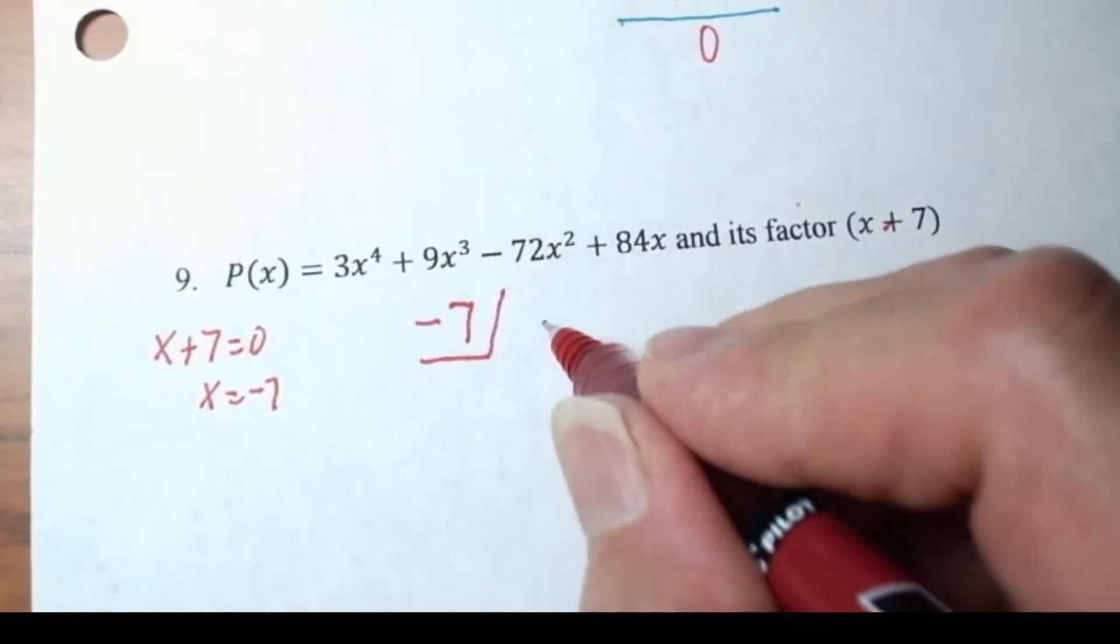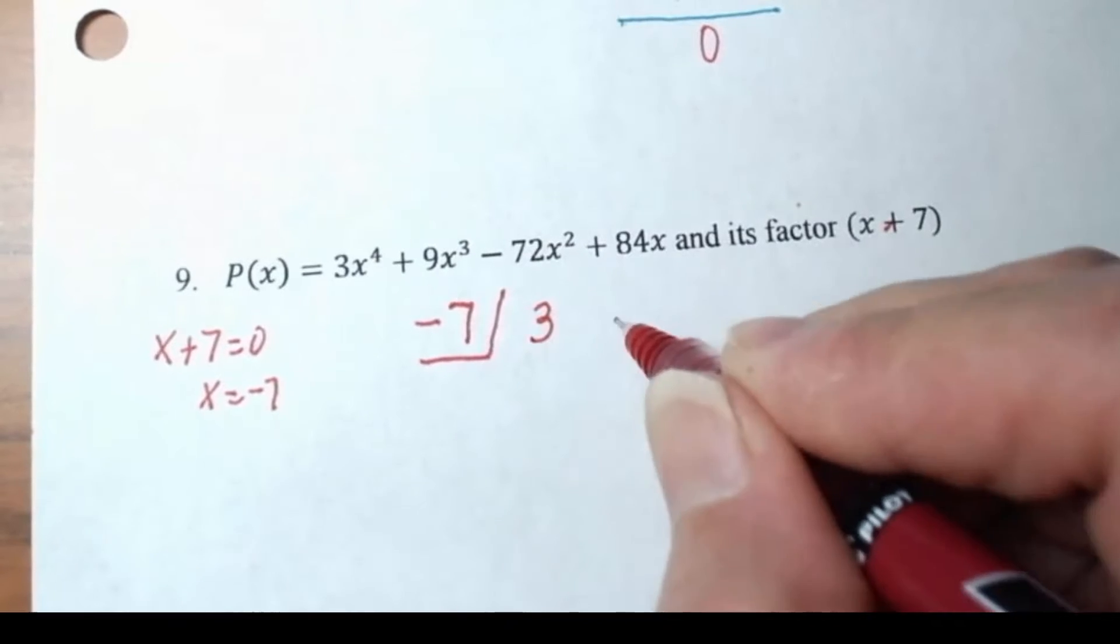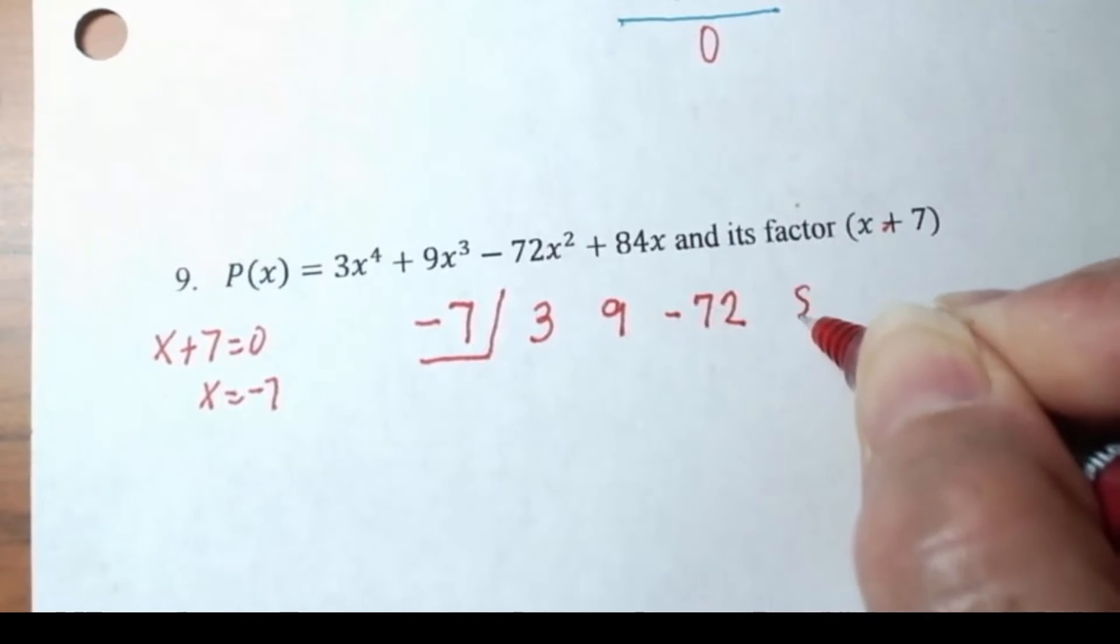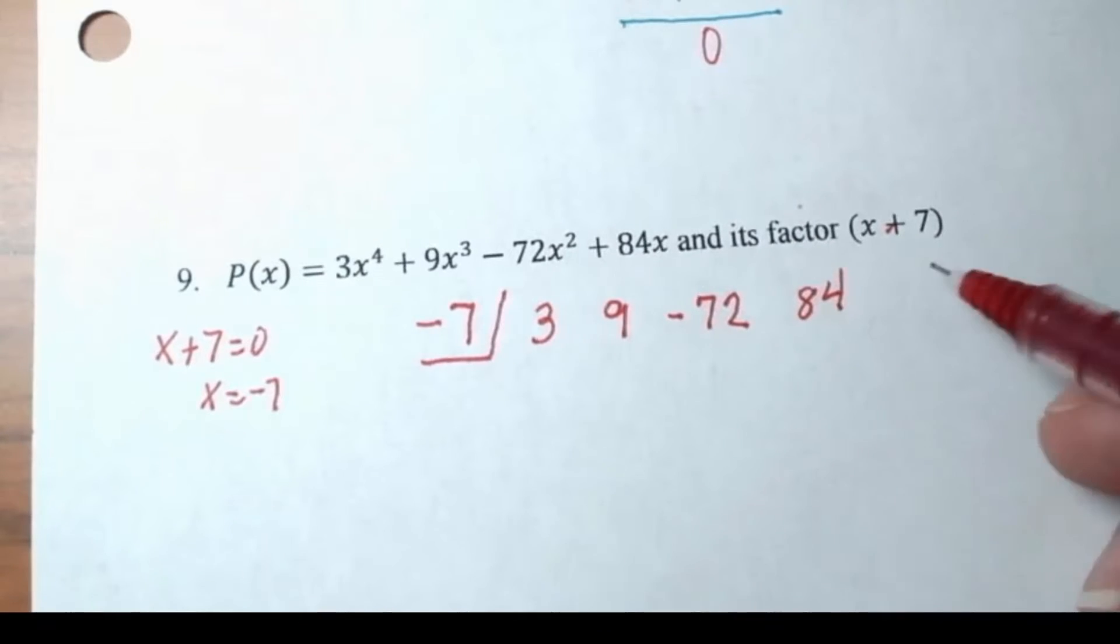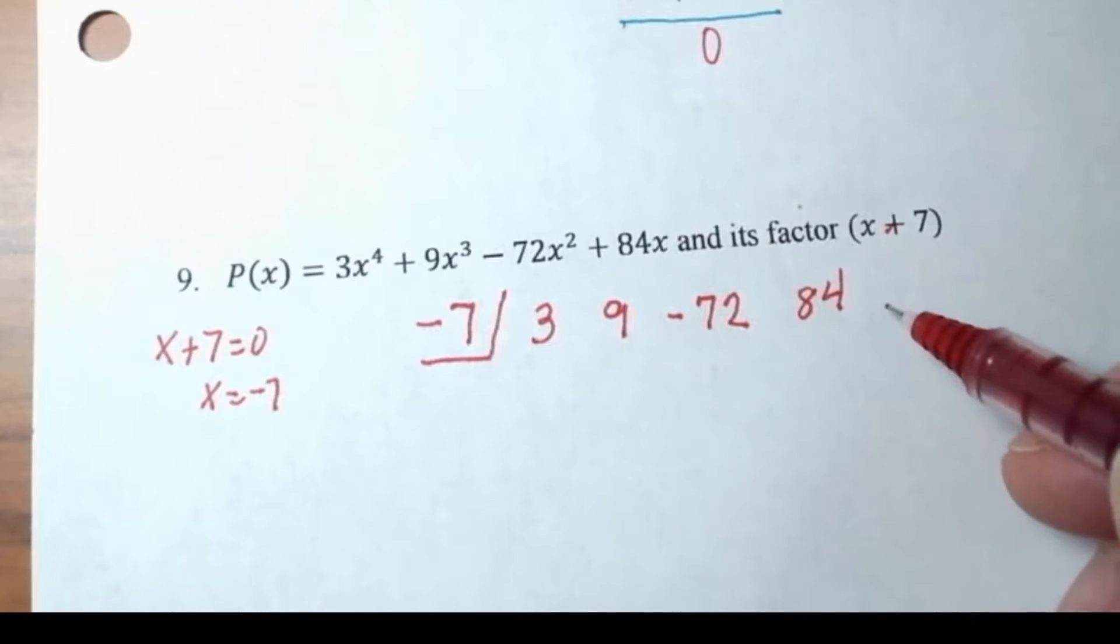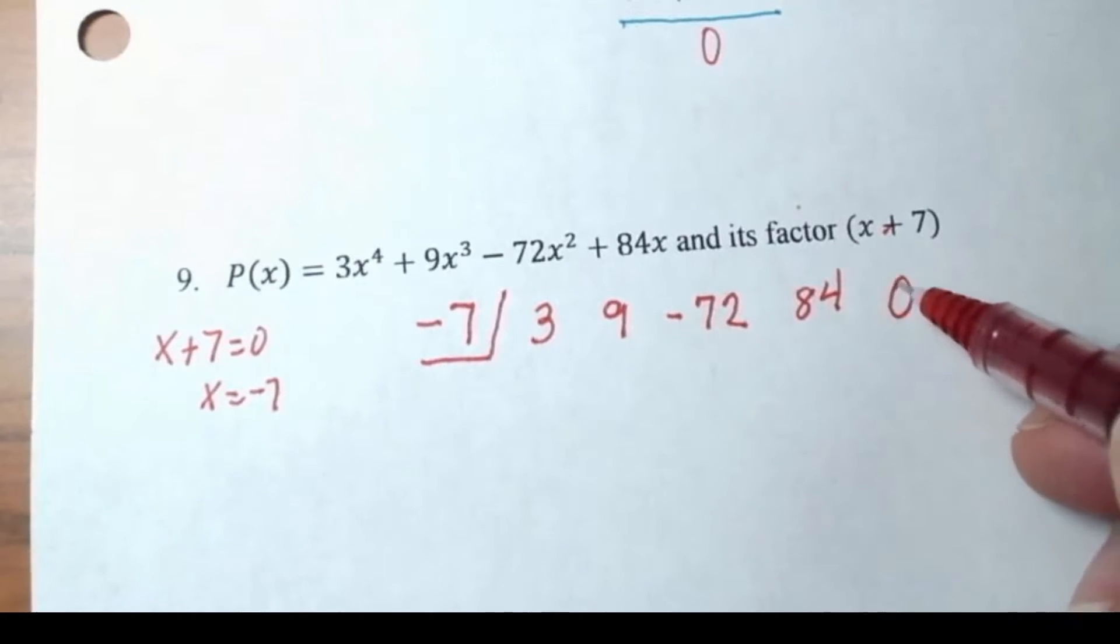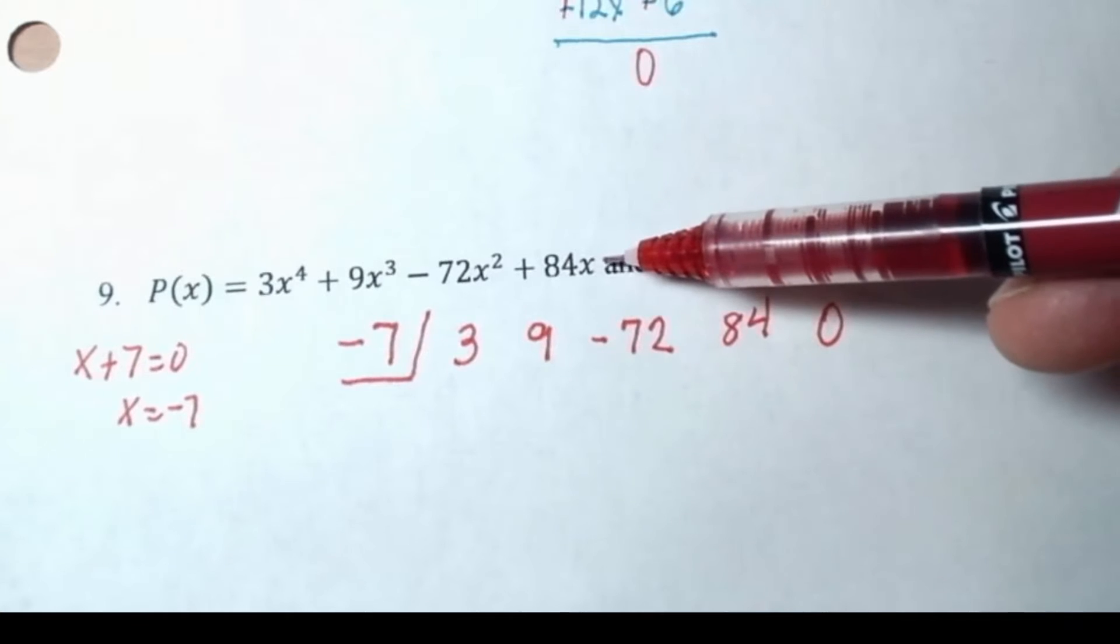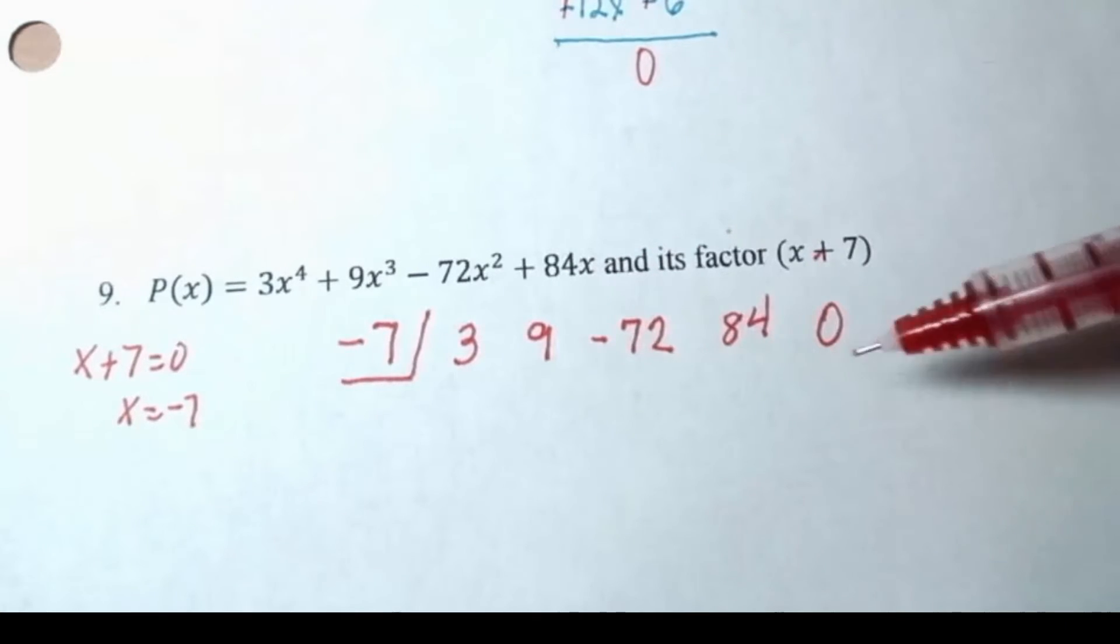And then you're going to write these numbers, the coefficients: three, nine, negative 72, 84. And guess what? There's a missing term. Did you notice that our constant was missing? I need to put a zero placeholder for that. We didn't have a constant here, so we have to put a zero there.